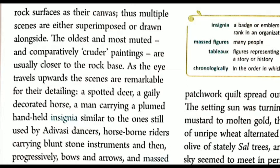We can see a spotted deer, a gayly decorated horse, a man carrying a plumed hand-held insignia similar to those still used by Adivasi dancers, horse-born riders carrying blunts, and then progressively arrows and figures engaged in battle. Generation after generation, as lifestyle developed, paintings were made one on top of another — the earliest, rough, crude-line paintings are closest to the rock surface, and later, more modern paintings were built up above them.